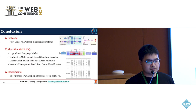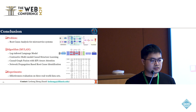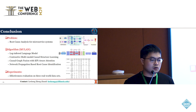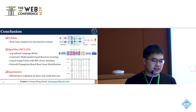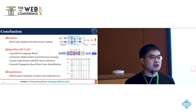In conclusion, we tackled the problem of root cause analysis for the microservice system. We introduced MULAN, which consists of four modules: the log-tailored language model, the contrastive multi-modal causal structure learning module, causal graph fusion with KPI-aware attention, and network propagation-based root cause identification to produce top-K potential root causes. We evaluated the effectiveness of our proposed method on three real-world datasets. I am now ready to answer any questions you may have.